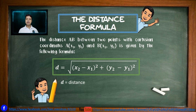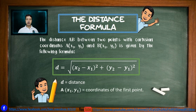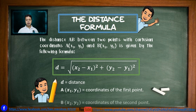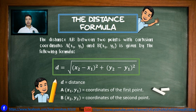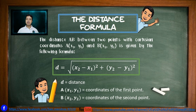Always remember that D stands for the distance. A with the coordinate of x₁, y₁ is the coordinate of the first point, and B with the coordinate of x₂, y₂ is the coordinate of the second point. You'll be the one to assign who is the first point and who is the second point.